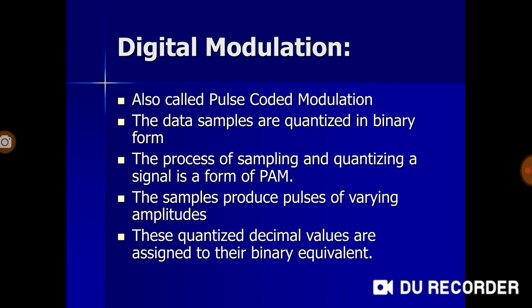Digital modulation is also called pulse coded modulation, or PCM. The data samples are quantized in binary form. The process of sampling and quantizing a signal is a form of pulse amplitude modulation, PAM. The samples produce pulses of varying amplitudes, and these quantized decimal values are assigned their binary equivalents. So stepwise, we take analog signals through sampling and then quantization to obtain discrete digital values.